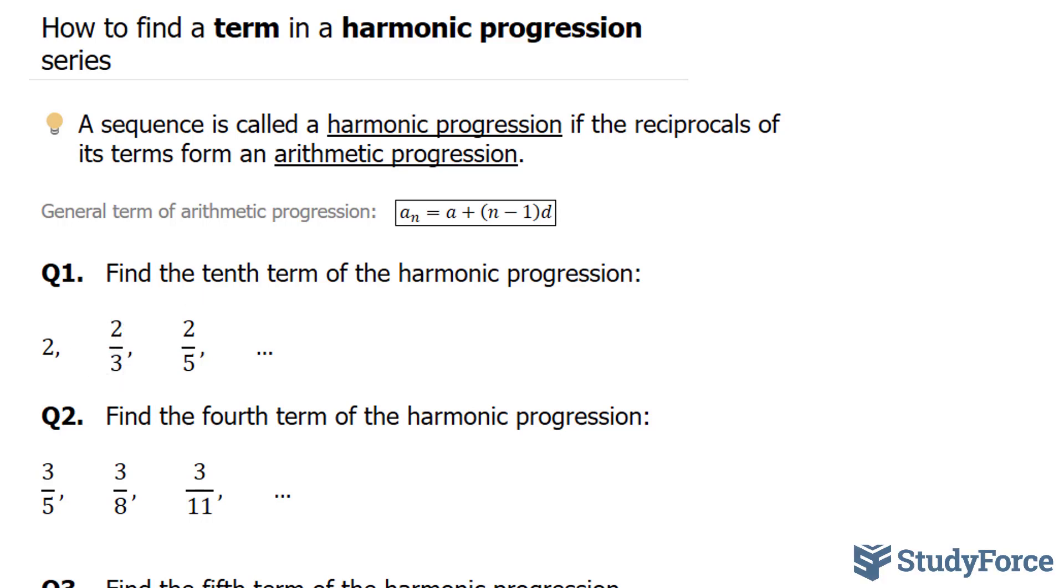The first thing that you want to do is write each of these numbers as their reciprocals. So this 2 becomes 1 over 2, this becomes 3 over 2, and this becomes 5 over 2.